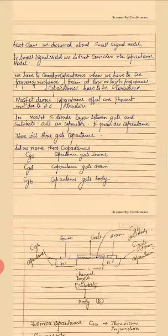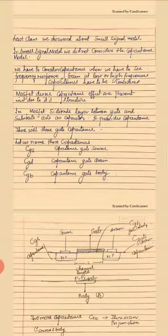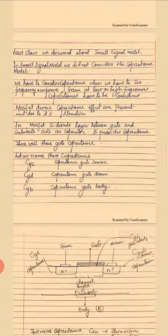The MOSFET is a three-terminal device with source, gate, and drain. The gate material is made up of a silicon oxide layer — an inactive region made of SiO2. This SiO2 layer is exactly equivalent to a capacitance; it provides a capacitive plate between the different regions of the MOSFET.